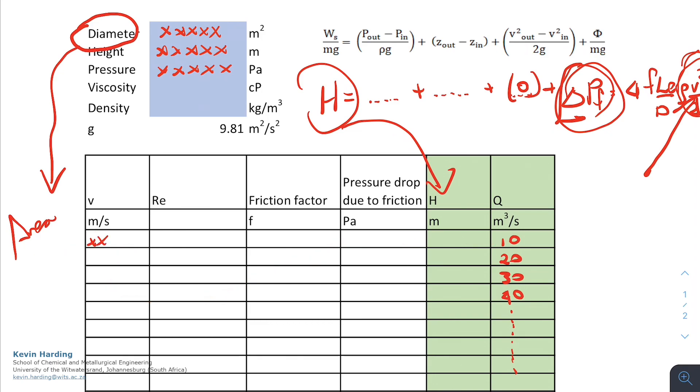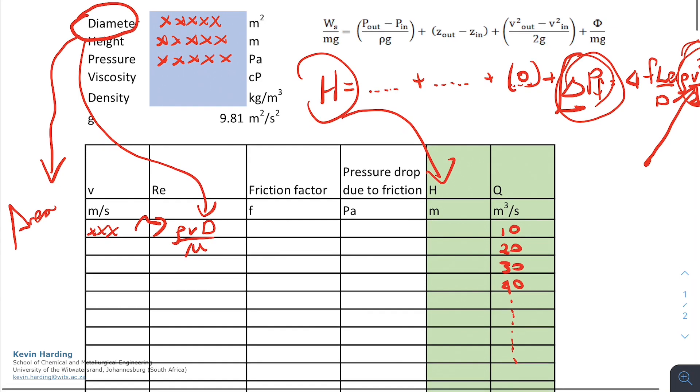From that value, that meters per second value that I've now calculated, I can calculate a Reynolds number, which was rho V D upon mu. In the table, I've already got the diameter, so we can fill in the diameter from the constant. The velocity is coming from the cell to the left. The density we can calculate or we would be given or we would know that it's water or oil, so we've got the density value here, as well as the viscosity. These are all our constants in the top, and we now have our Reynolds number.